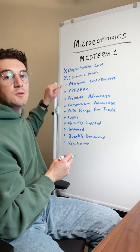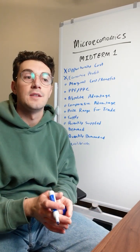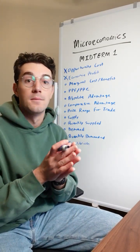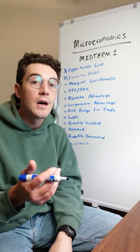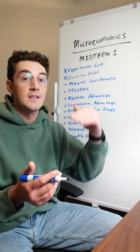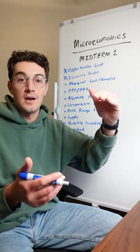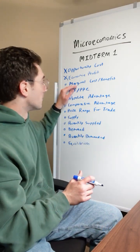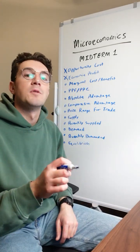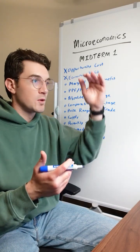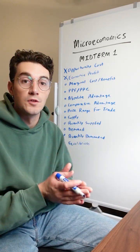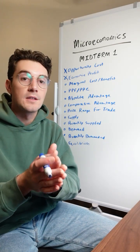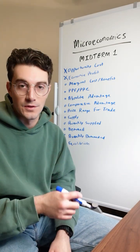Next up is marginal cost and benefit. The biggest thing to remember is that marginal just means change. So at a given unit, to find the marginal benefit or cost, all you do is take the previous unit's total benefit or cost and subtract from it the current unit. That change is the marginal cost or benefit. In cost-benefit analysis problems where they ask what unit you will consume to, the unit where marginal benefit equals marginal cost will be the last unit you consume.